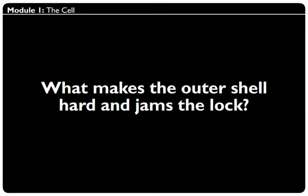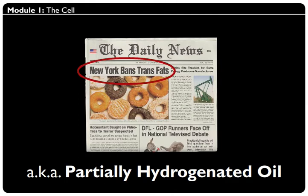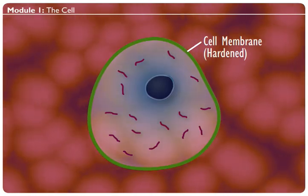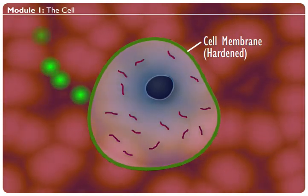What makes the outer shell hard and jams the lock? The main culprits are trans fats, also known as partially hydrogenated oil. Why? Because trans fats are terribly unhealthy. We'll learn more about them later, but basically they harden the outer shell and make it resist opening to be fed. They cause your cells to starve.